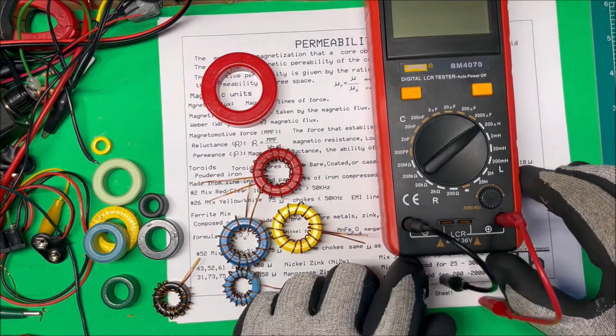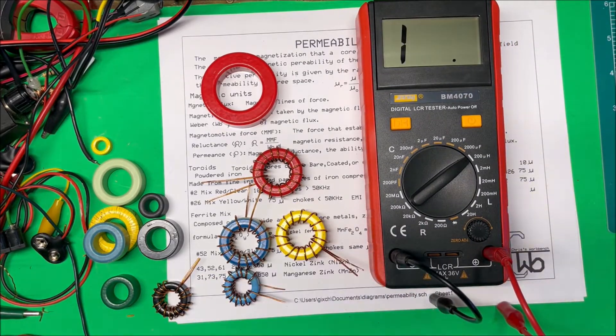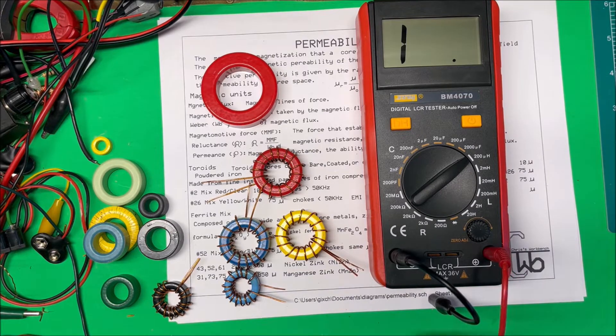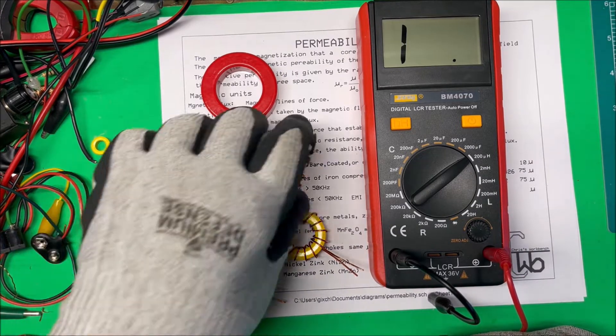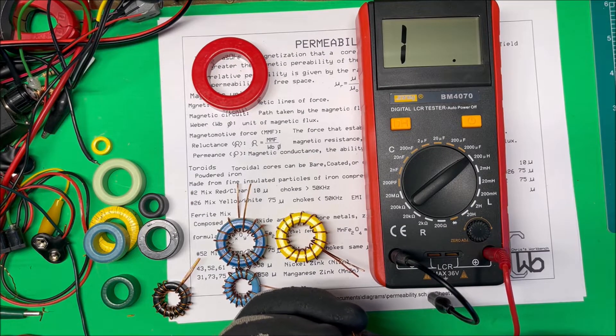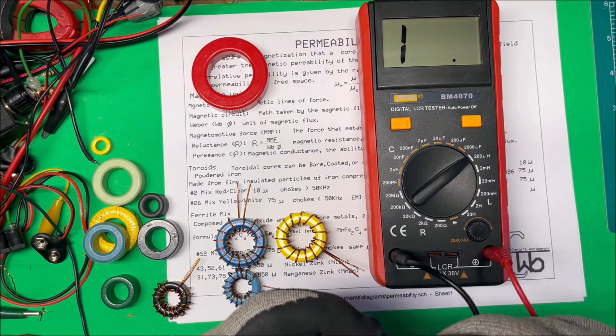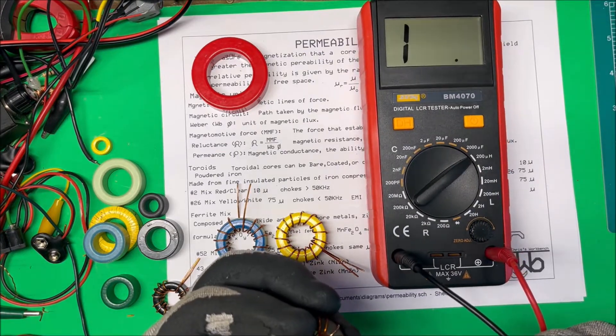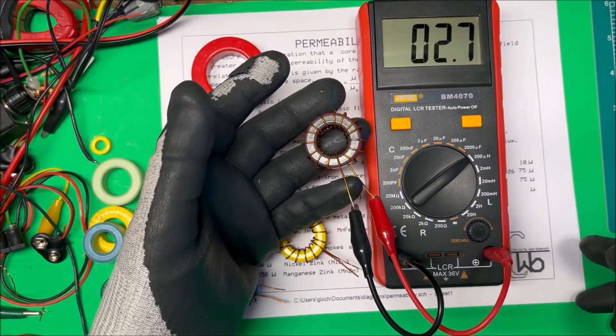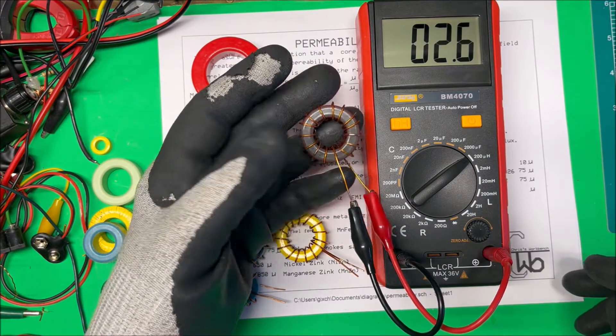So here's a tester here. I don't know if you can see. You can see that. And let's start off with the red one. So that's 10. It's got a permeability of 10 and there it is there, 2.6.